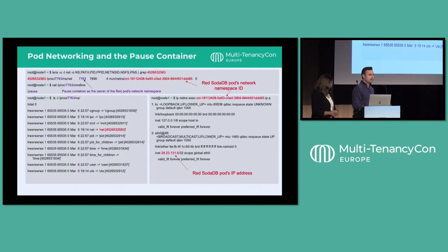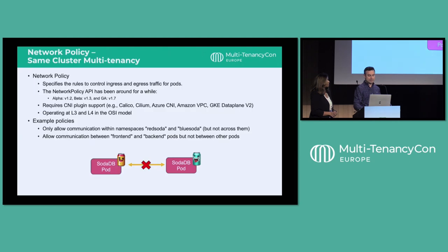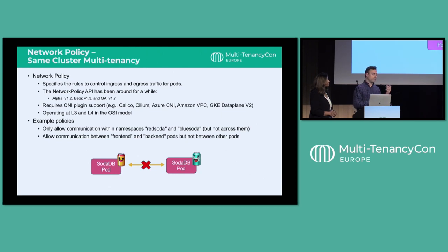These network namespaces are implemented through pause containers in Linux and Kubernetes. For each pod, for example the red SodaDB namespace, its owner is a pause container, and once you enter that namespace, you can see the IP address corresponding to the red soda pod. Network policies are ways to specify rules for controlling ingress and egress for pods — this requires CNI plugin support and has been there since the early days of Kubernetes. An example would be to allow communication between front-end and back-end, or restrict communication within only the red or blue soda namespace but not across them.